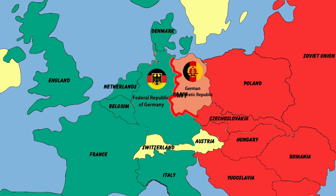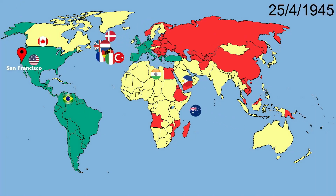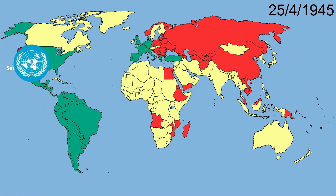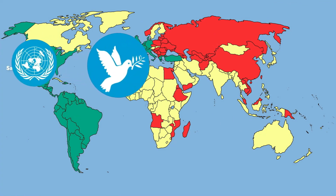On April 25, 1945, in San Francisco, the United States and 50 countries established the United Nations, one of the largest and most important organizations in maintaining world peace and security. The United Nations promotes cooperative relations between countries to this day.